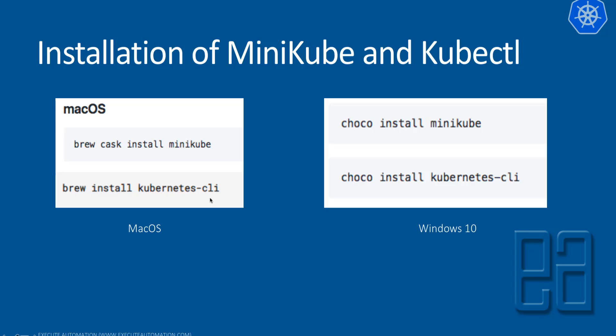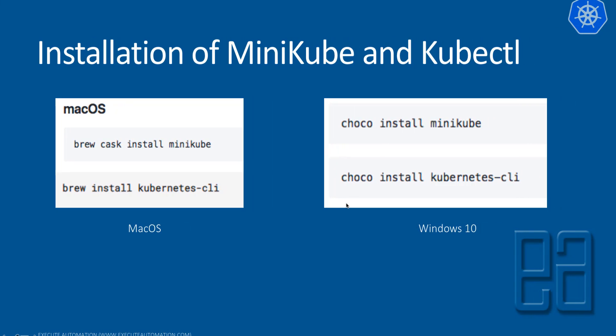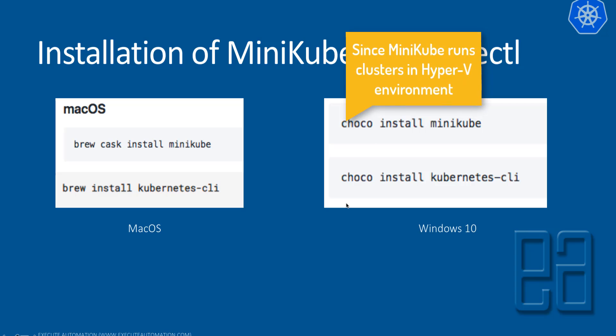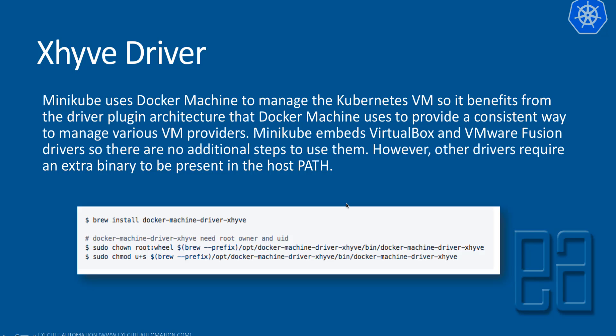Since Windows 10 has Hyper-V installed within your machine when you install Docker for Windows with Hyper-V enabled, you don't really necessarily need a separate driver when you run Minikube. But for Mac OS, we need to have a driver — the xhive driver. Minikube uses Docker Machine to manage the Kubernetes VM, and it benefits from the driver plug-in architecture Docker Machine uses to provide a consistent way to manage various VM providers. Minikube embeds VirtualBox and VMware Fusion drivers, so there are no additional steps to use them. However, other drivers require an extra binary to be present in the host path.